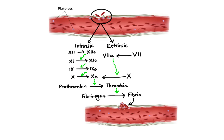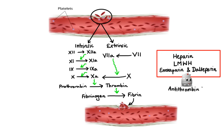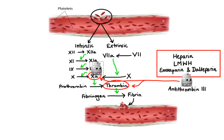Now let's talk about anticoagulants — drugs that work by disrupting the coagulation cascade. Let's begin with heparin and low molecular weight heparins, such as enoxaparin and dalteparin. These agents bind to our natural anticoagulant circulating in blood called antithrombin-3. The primary function of antithrombin is to inactivate factor 10a and thrombin. Heparin binds to antithrombin and accelerates its activity, resulting in rapid inactivation of both factor 10a and thrombin. Unlike heparin, low molecular weight heparins have very little effect on thrombin inactivation and instead selectively accelerate inactivation of factor 10a.